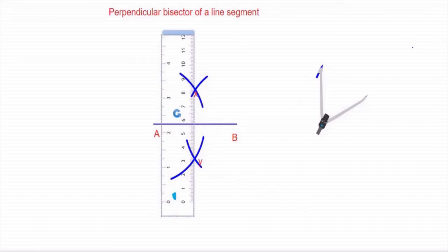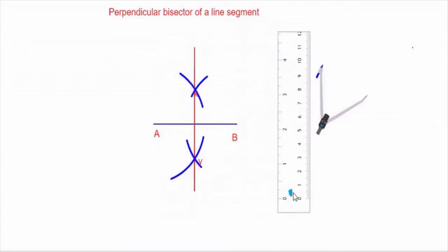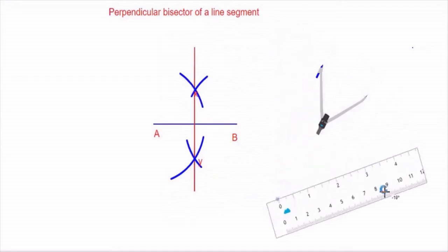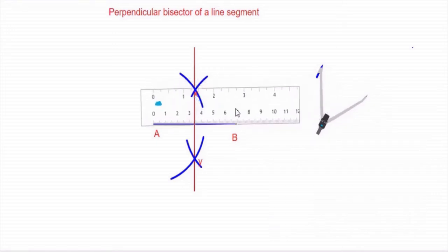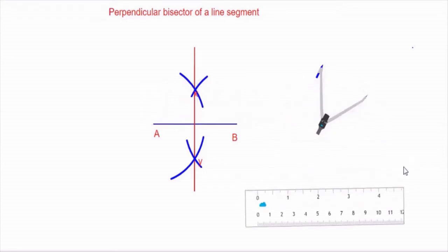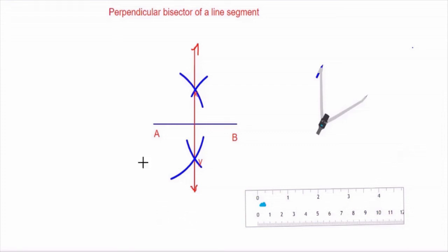Keep the compass on the other end of the line segment and draw another arc intersecting the already drawn arc. Draw the arc on the other side as well. We have drawn four arcs — two pairs. The points of intersection of the arcs are marked as X and Y. The perpendicular bisector will be the line connecting these two points. Draw a line through X and Y with the ruler. This particular line is the perpendicular bisector of line segment AB. We can verify it — both halves measure three and a half, confirming it is the perpendicular bisector. Put arrow marks on both ends to show that it is a line.